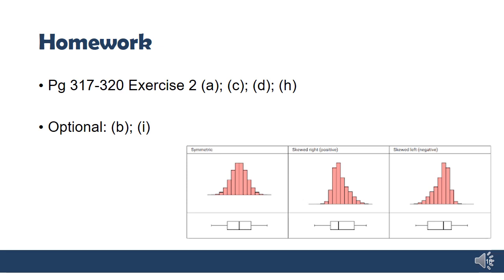For homework, you're going to do page 317 to 320 A, C, D, and H. And then if you want extra practice with this, do B and I. In a couple lessons, we're going to actually come back to this idea of skewness, but we're going to look at it in terms of grouped data and histograms. So we're going to see that there's a relationship between the box and whiskers we just talked about and what it looks like on a histogram. A little preview there. All right, talk to you next time.